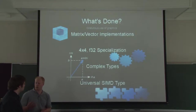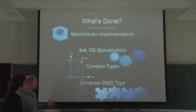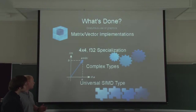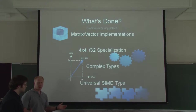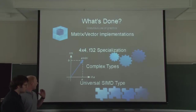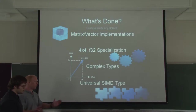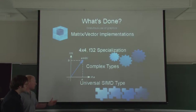It takes 4 SIMD instructions to fill one of those matrices, as opposed to 16 that it would normally take. So that's a nice performance gain right off the bat. Complex types are implemented with the arithmetic you'd expect — you can take complex conjugates and things to that effect. And we have a universal SIMD type, which will allow us to do SIMD operations for any sort of data and generally make optimization later a lot easier.